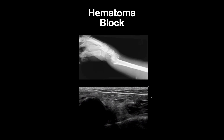In this image we can appreciate two distinct bony structures demonstrated by hyperechoic surfaces with posterior shadowing. On the left side of the screen we can see the distal fragment that is displaced dorsally compared to our proximal fragment seen here. This anechoic area represents the hematoma where anesthetic should be instilled to facilitate reduction.